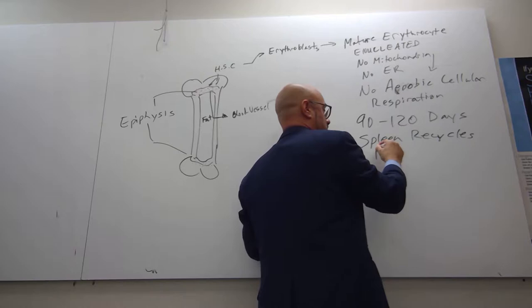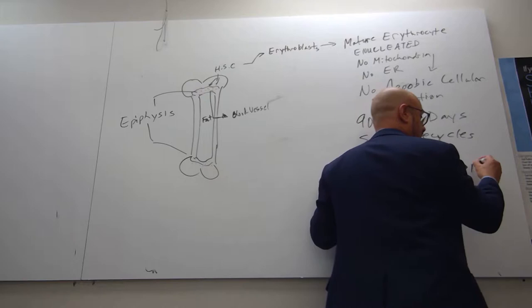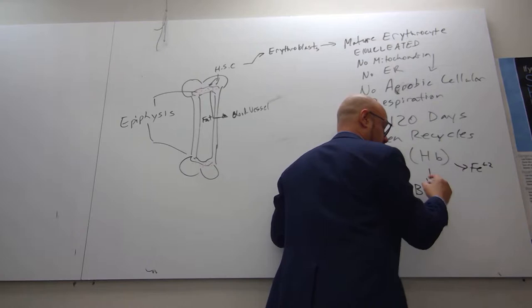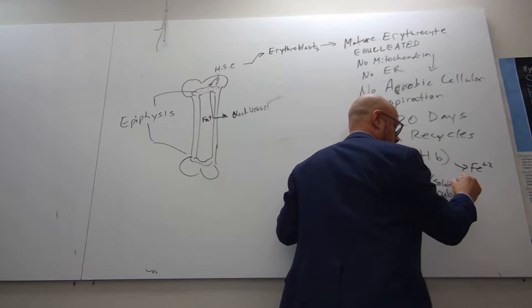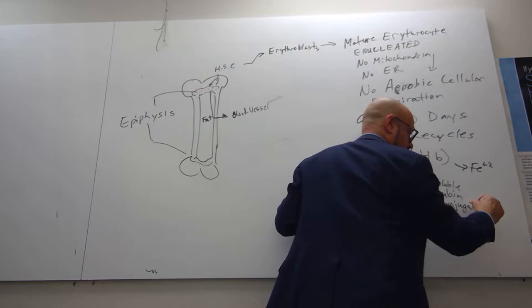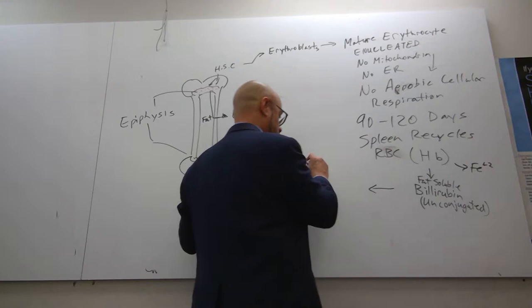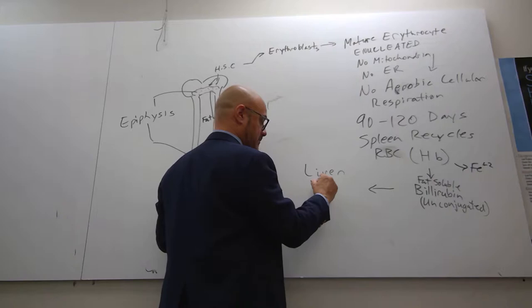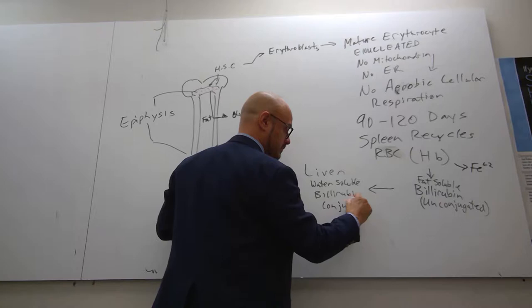The spleen recycles red blood cells and recovers the hemoglobin. It clips the iron off and recovers it. It takes the heme part and creates bilirubin, which is fat soluble unconjugated, meaning it hasn't gone to the liver yet. The liver does conjugation. The spleen produces fat soluble bilirubin, then it goes to the liver. The liver takes the fat soluble bilirubin and makes it water soluble conjugated bilirubin.